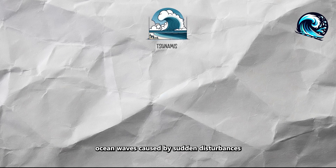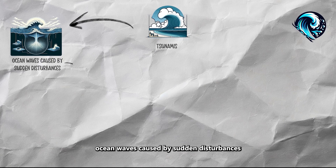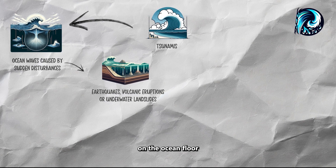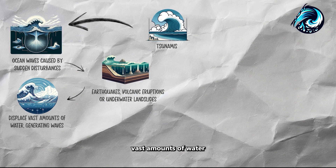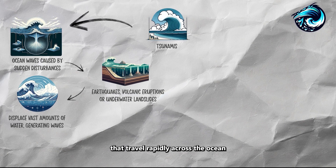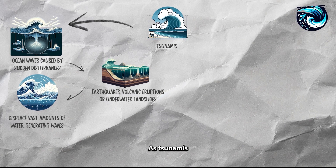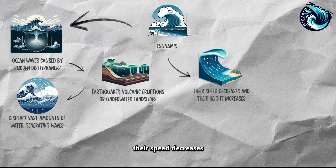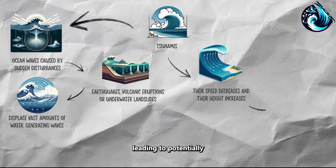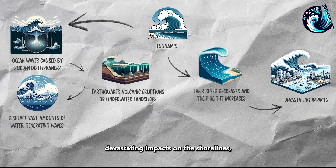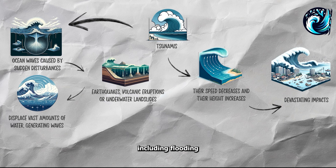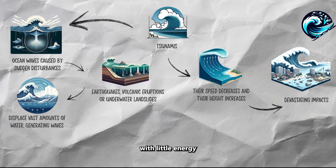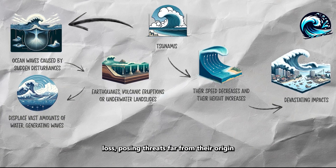Tsunamis are large ocean waves caused by sudden disturbances like earthquakes, volcanic eruptions, or underwater landslides on the ocean floor. These events displace vast amounts of water, generating waves that travel rapidly across the ocean. As tsunamis approach shallower coastal areas, their speed decreases and their height increases, leading to potentially devastating impacts on shorelines, including flooding and significant destruction. Tsunamis can travel long distances with little energy loss, posing threats far from their origin.